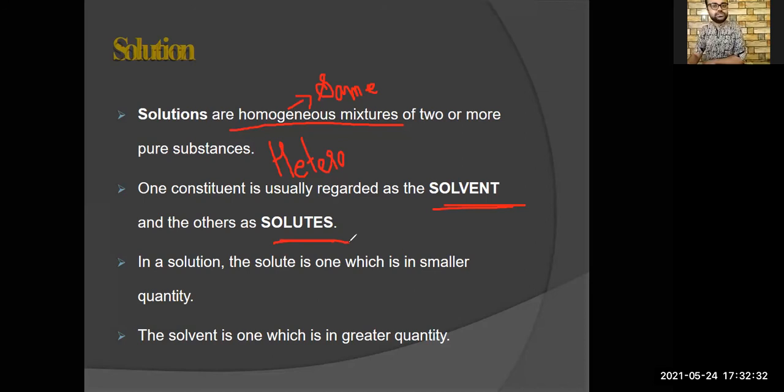So whenever you have a mixture, whether it is heterogeneous or homogeneous mixture, it always consists of two main components. One has to be solvent. Now what is solvent? Something which is present in greater quantity. Anything which is present in larger amount has to be solvent. Anything which is present in smaller quantity has to be a solute.